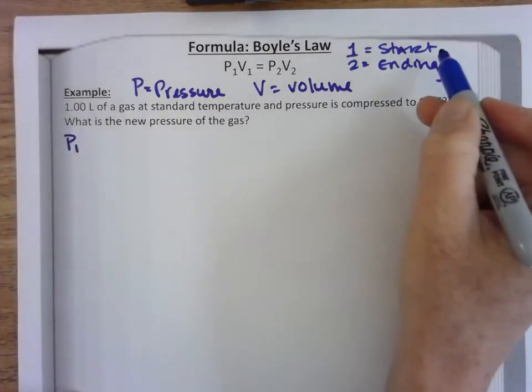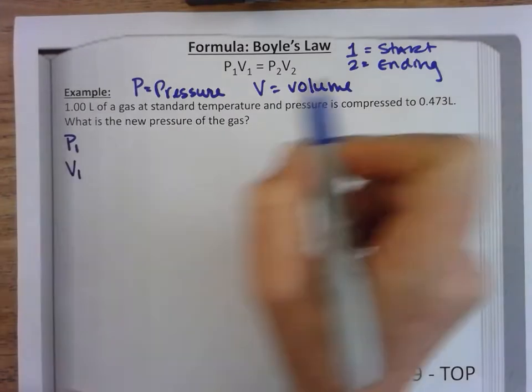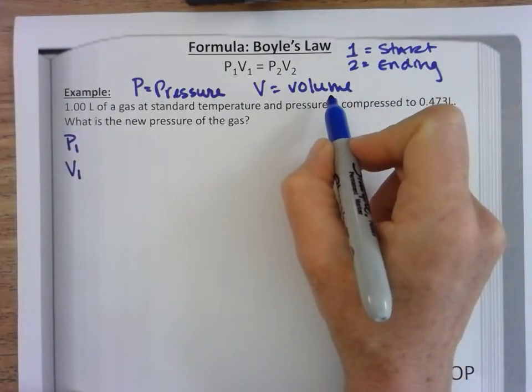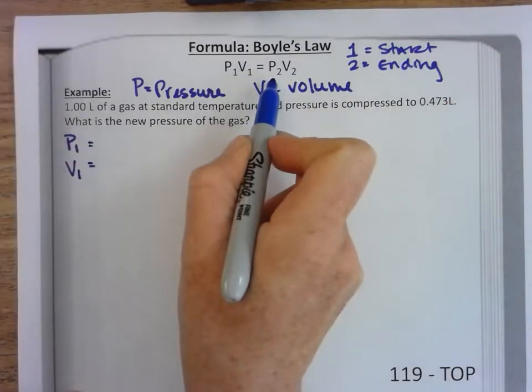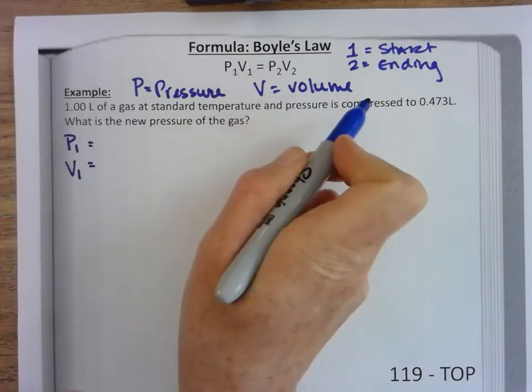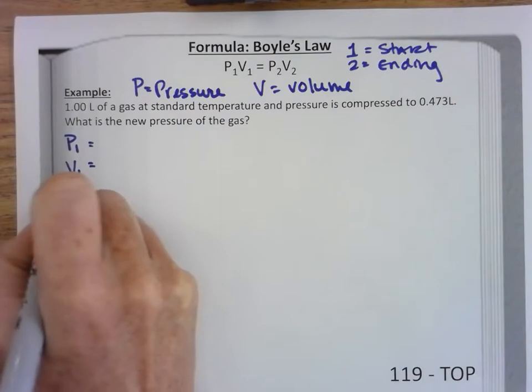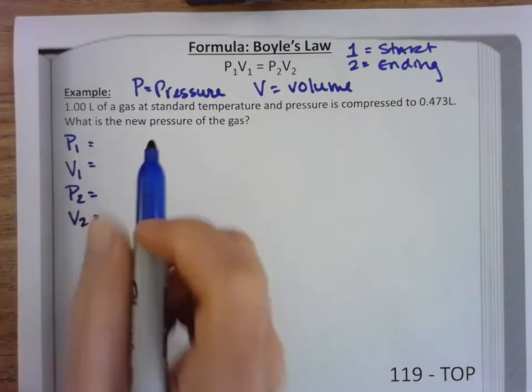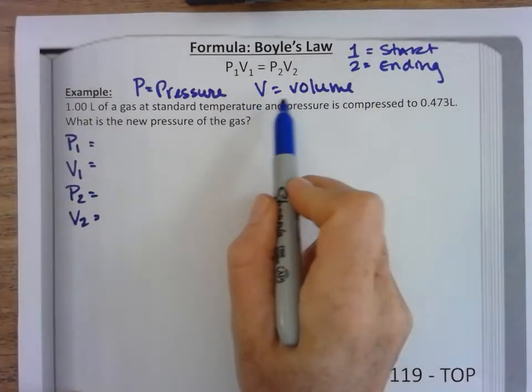Based on my formula I need a p1 or a starting pressure, I need a v1 or a starting volume, I need a p2 and a v2, an ending pressure and volume. So I'm going to go back into the reading. It says one liter of gas. Volume measures in liters, so 1.00 liter is my v1.